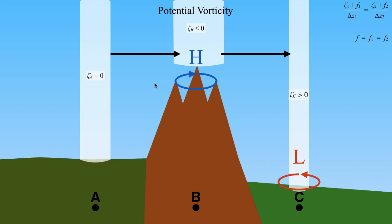This also holds true for any mountain range, not just the Rockies. If you've got zonal flow over any elevated terrain, you will see the same response. A lot of severe weather events in the plains are driven by these lee cyclones, which will be a topic covered later. So that's going to do it for this lecture on barotropic and baroclinic atmosphere, as well as potential vorticity and related topics. I will see you all in the next lecture.